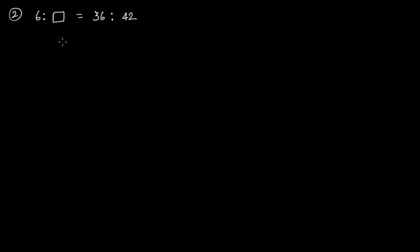Next, this is 6 to some missing number we have to find, and this is 36 to 42. These are equivalent ratios because we have an equal sign here. So this is 6 to the missing number, equal to 36 to 42.